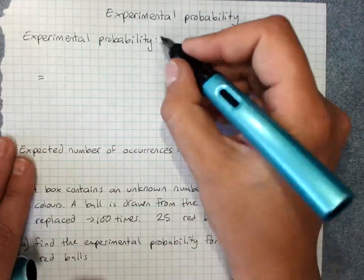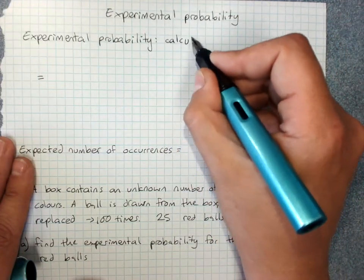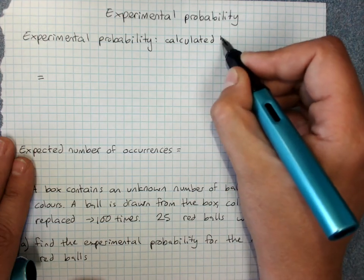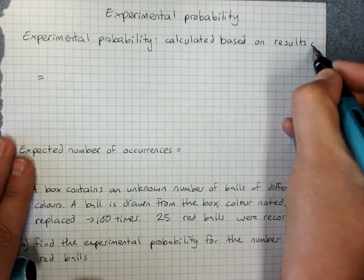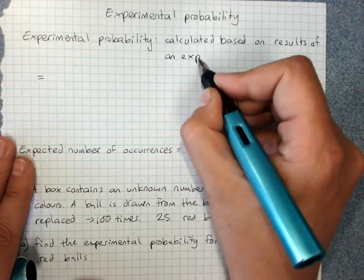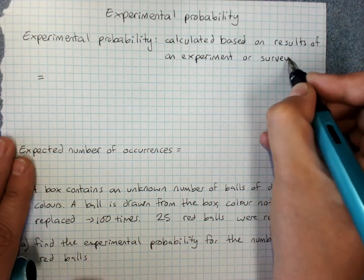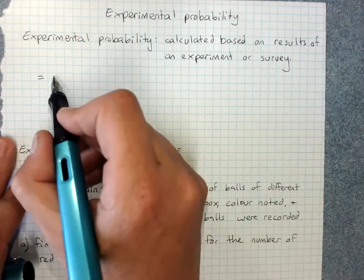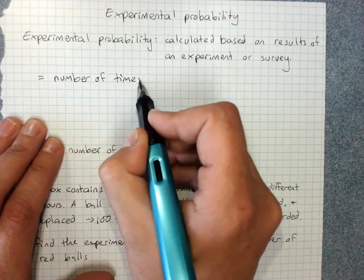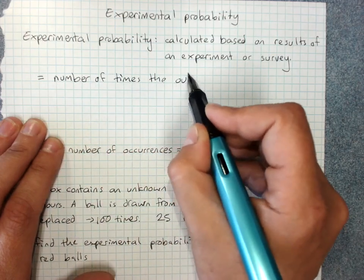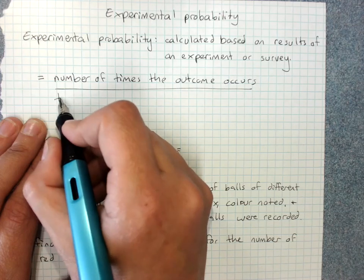So experimental probability is calculated based on the results of an experiment or survey. It's calculated by the number of times the outcome occurs divided by the total number of trials in the experiment.